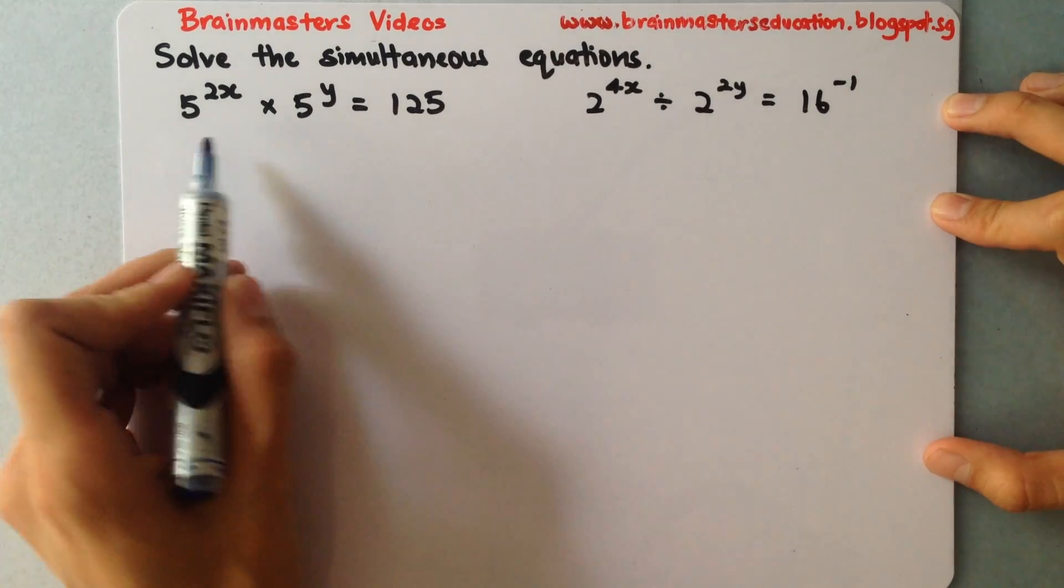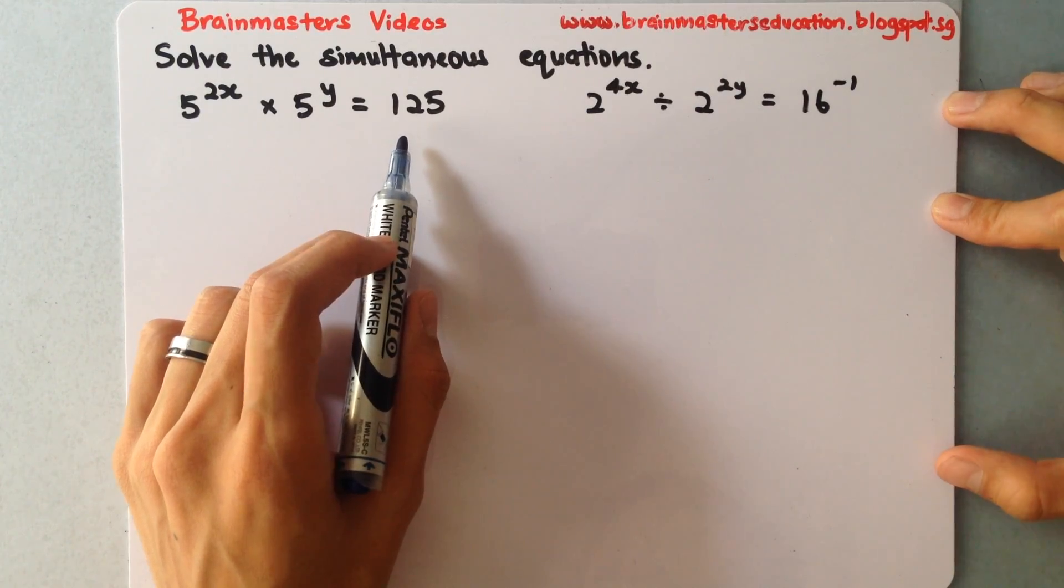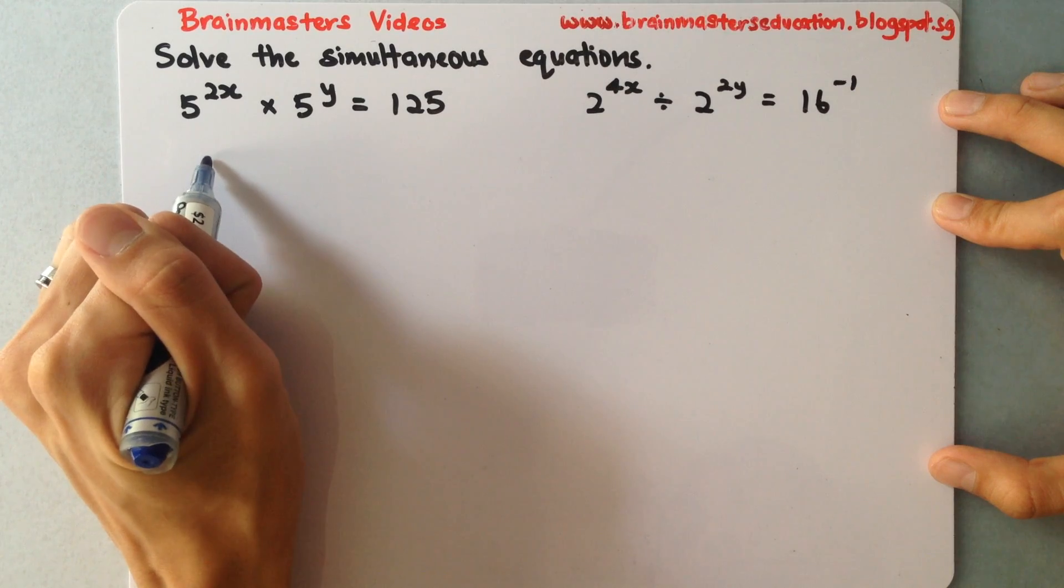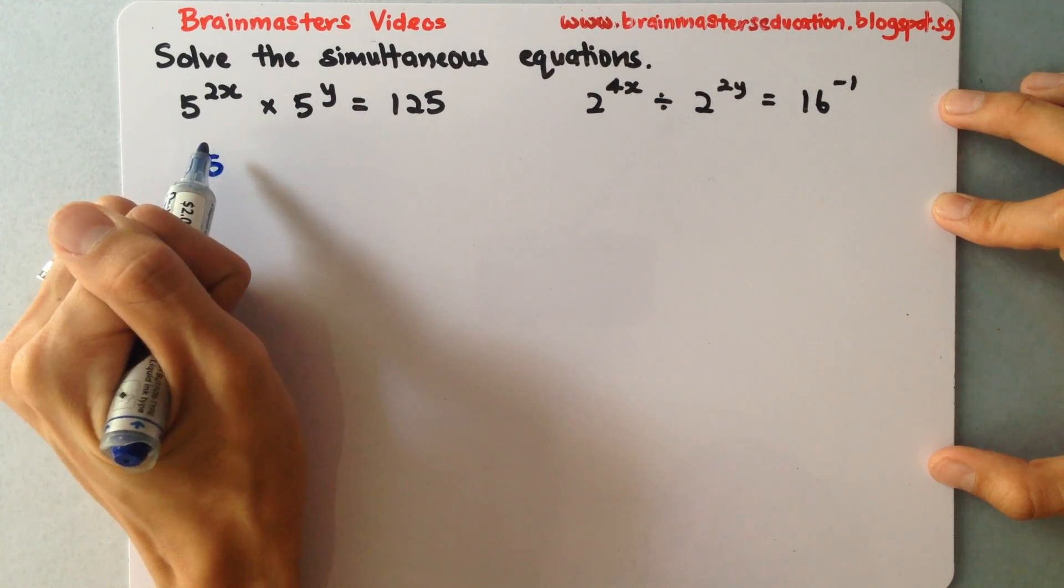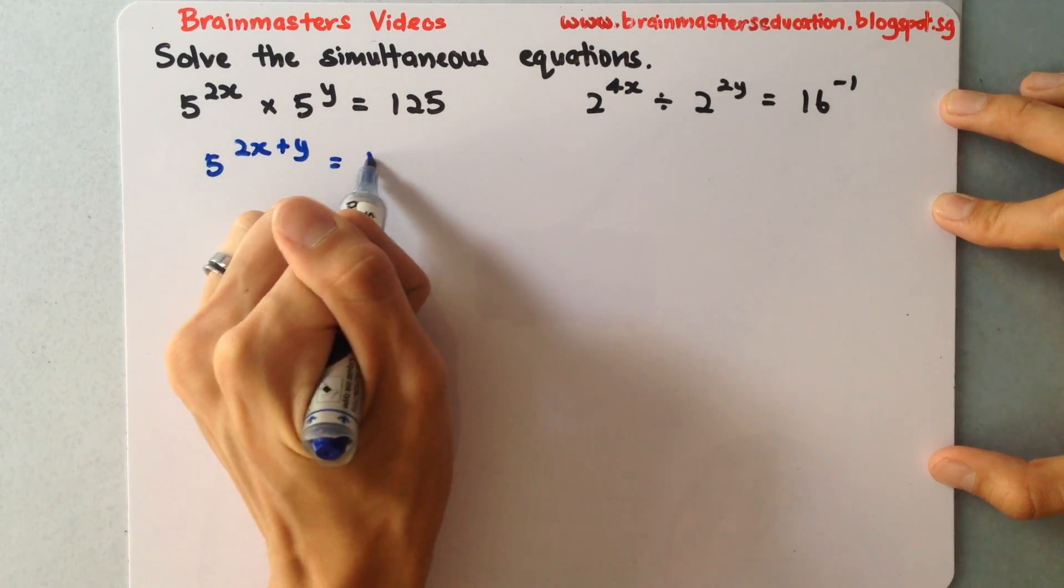So how do we do this? Over here you can actually recognize that 125 is related to 5 to the power of something. So what we will write is, using this on the left-hand side, I will actually combine them together to have 5 to the power of 2x plus y. And this is actually 5 cubed.